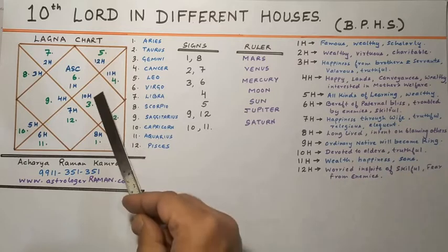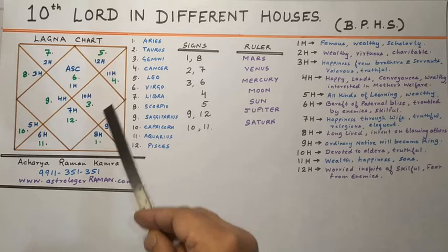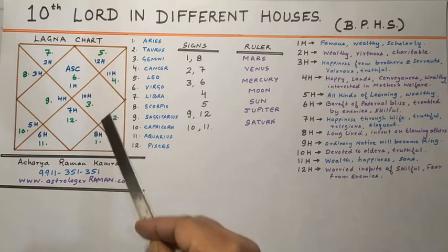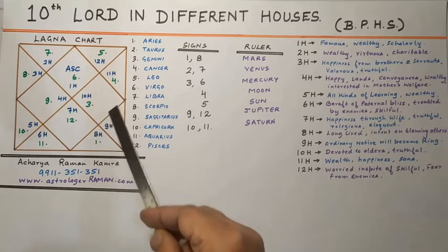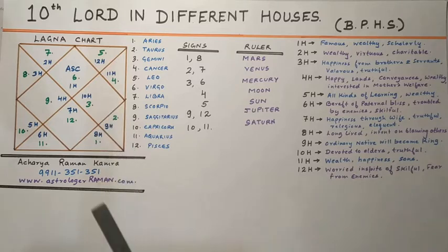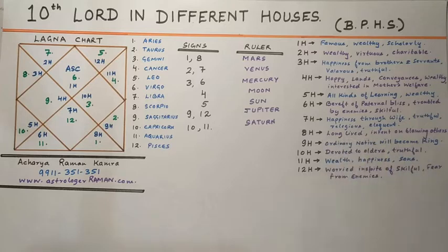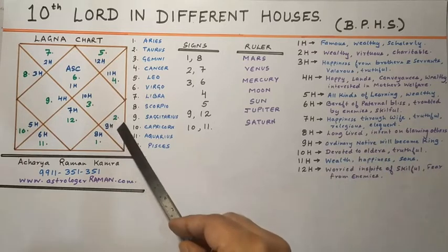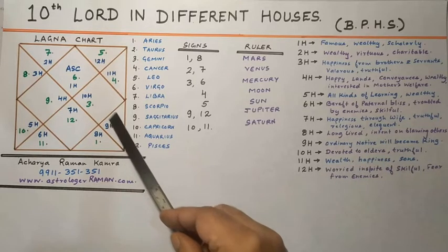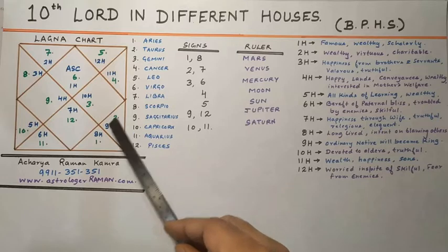If the 10th Lord is placed in the 8th house, the native will be devoid of acts, long-lived, and intent on blaming others.